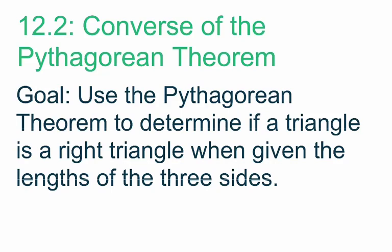For lesson 12.2, we're going to be looking at the converse of the Pythagorean Theorem. Our goal for this lesson is to use the Pythagorean Theorem to determine if a triangle is a right triangle when we have the three lengths of the three sides of the triangle.